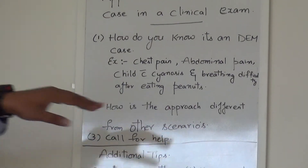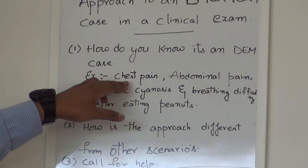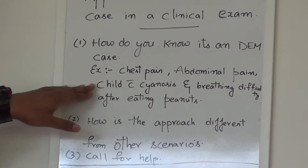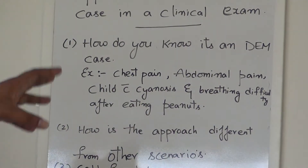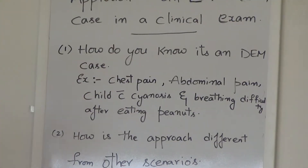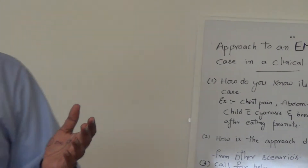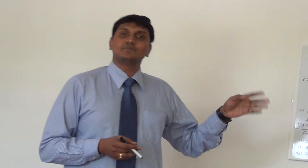How is the approach different from other scenarios? How do you know it's an emergency case? There are a few red flags in history taking — if it's chest pain, if it's severe abdominal pain, if the question says a child with breathing difficulty after eating peanuts. Sometimes there will be clues in the vitals. You should know the red flags. When reading the scenario outside the room, you might see the patient has lost consciousness and is lying there, or was found by a stranger on the road. They can frame it in many ways, but based on that you know it's an emergency case.